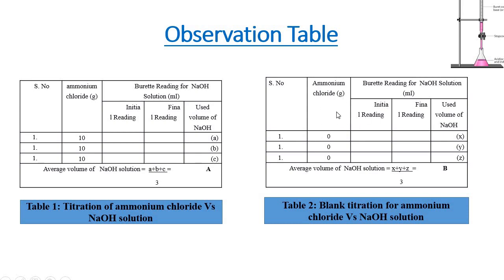In the second observation table, the amount of ammonium chloride is 0 as we all know that in blank titration, the analyte amount is 0. The next is the burette reading with initial reading, final reading, and used volume of NaOH. Reading is repeated 3 times so we can get x, y, and z, and the average volume of NaOH solution is calculated and we get a value of B. These are the observation tables.